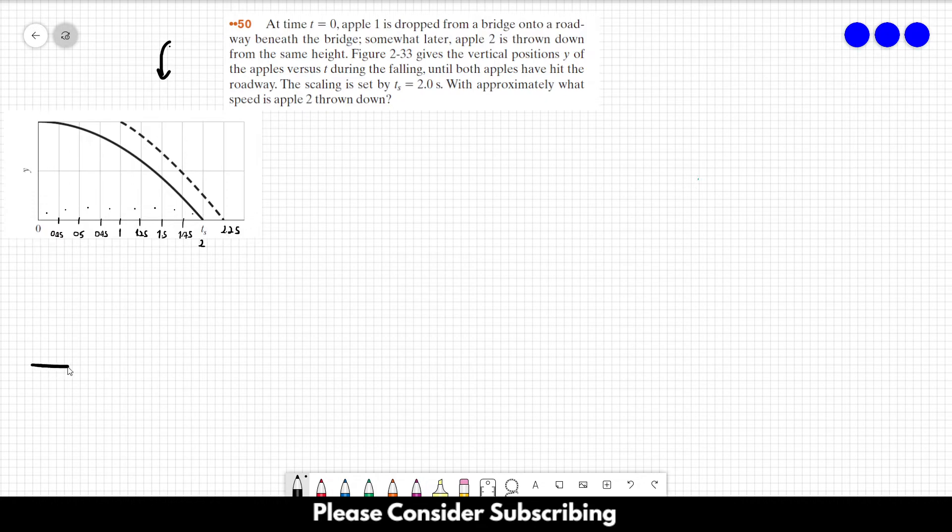So let's draw instead of a bridge, the apples fall from a building. Let's say that the first apple is a red apple, and it goes like this. The second apple is a green apple, and it falls from the top of the building as well.